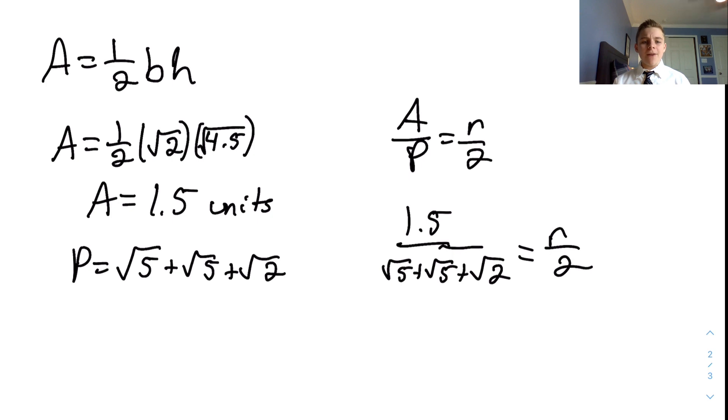After simplifying the perimeter, we get about 5.8863495. So our equation is now 1.5 divided by 5.8863495 equals the radius divided by 2.